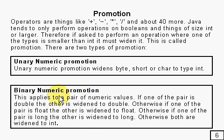And something called binary numeric promotion, which does the same sort of thing involving two values. You use this basically where you've got an operator that operates on two things, like plus, where you're adding two things together. What happens is it basically pushes everything up the tree so that both operands are the same type, and they are at least an int.